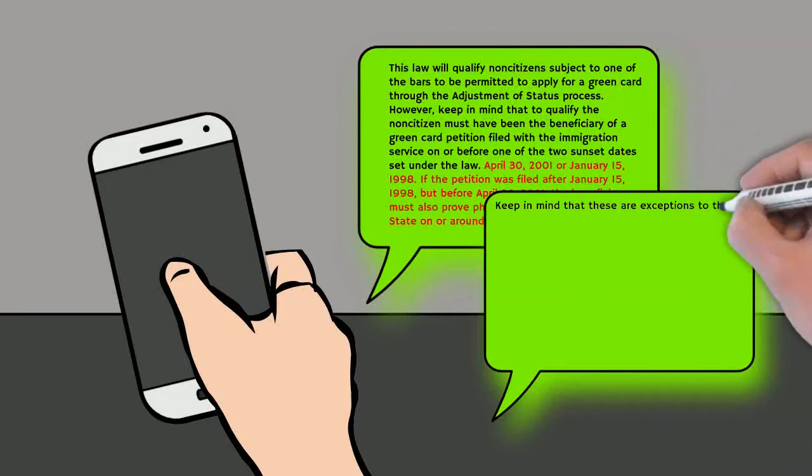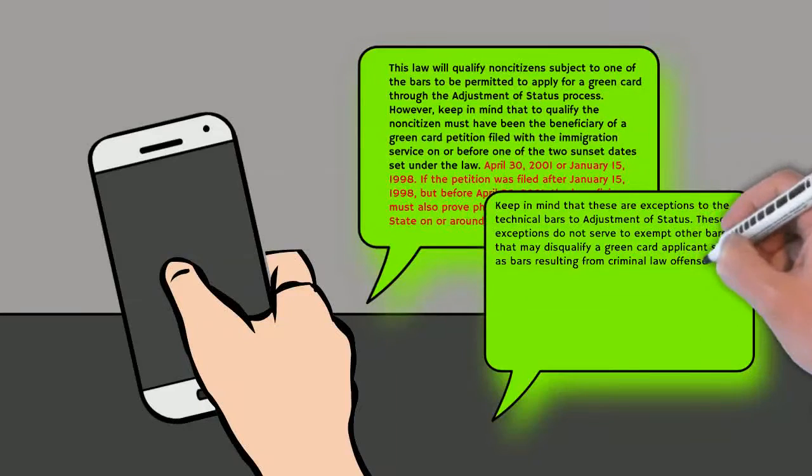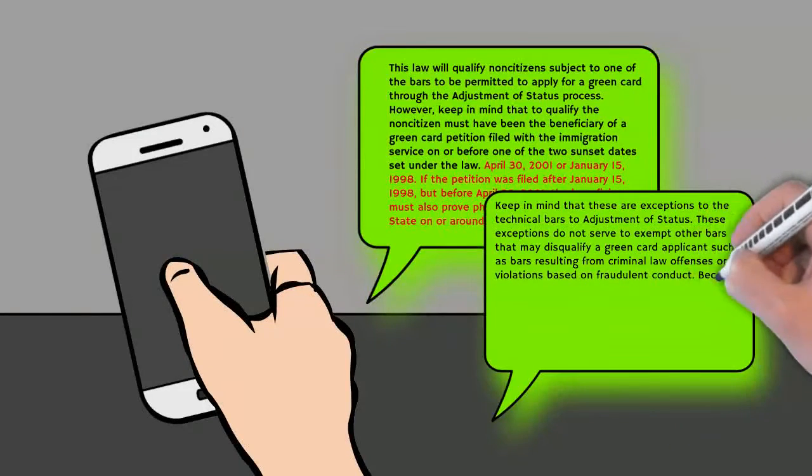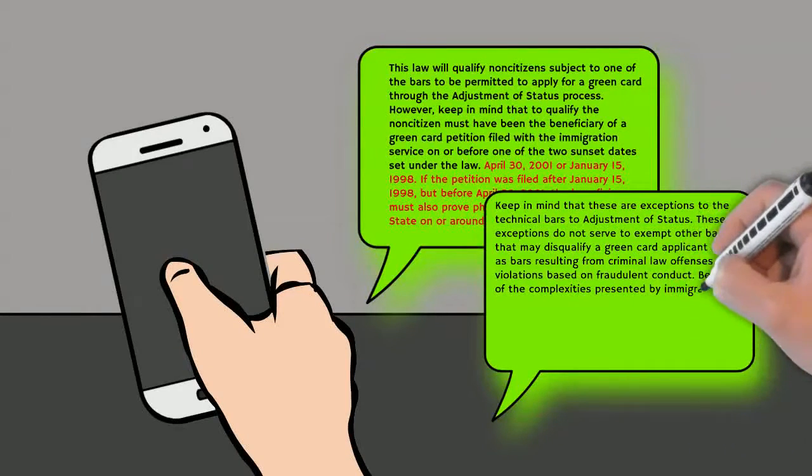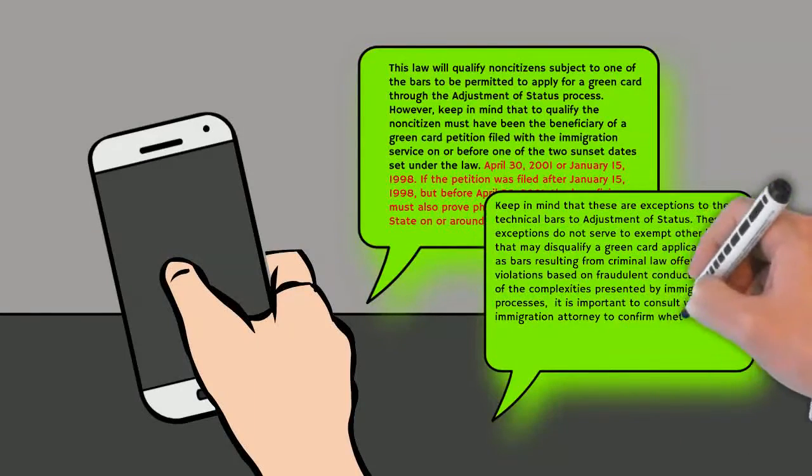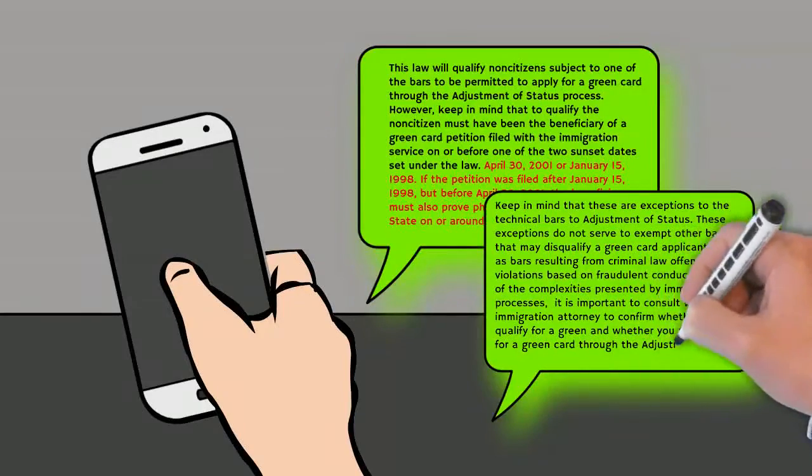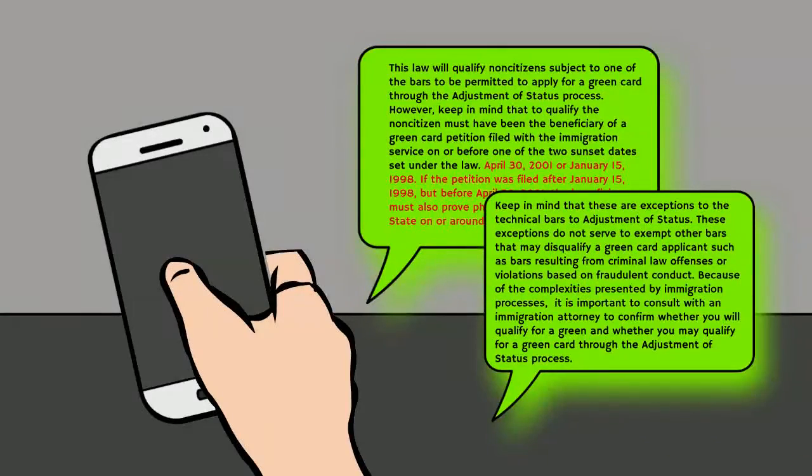Keep in mind that these are exceptions to the technical bars to adjustment of status. These exceptions do not serve to exempt other bars that may disqualify a green card applicant, such as bars resulting from criminal law offenses or violations based on fraudulent conduct. Because of the complexities presented by immigration processes, it is important to consult with an immigration attorney to confirm whether you qualify for a green card through the adjustment of status process.